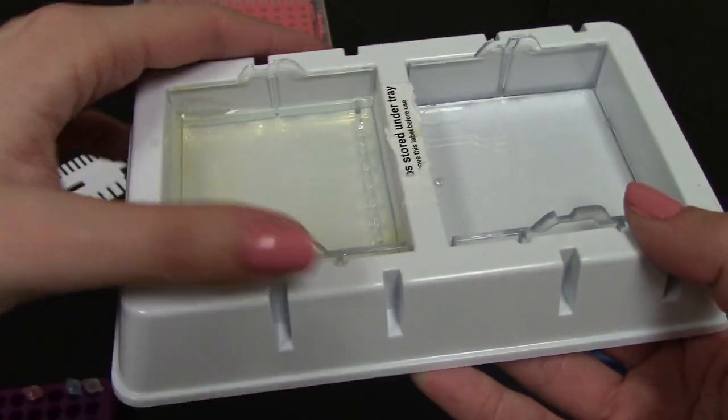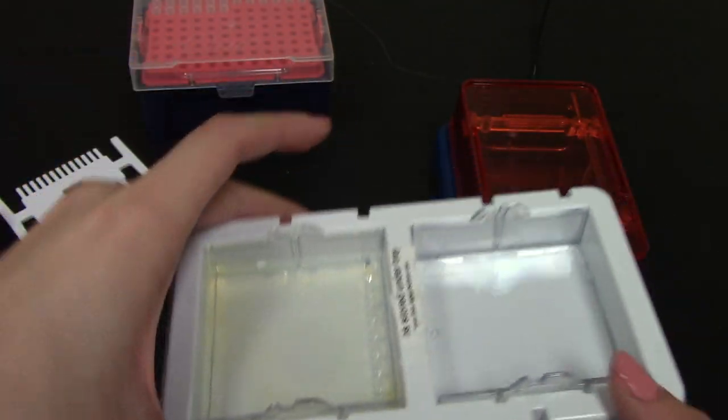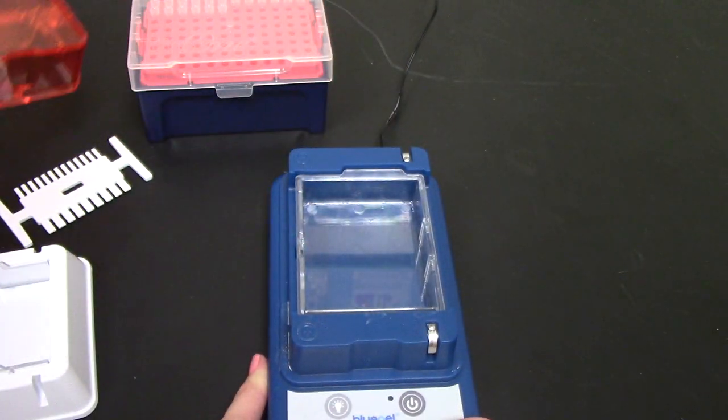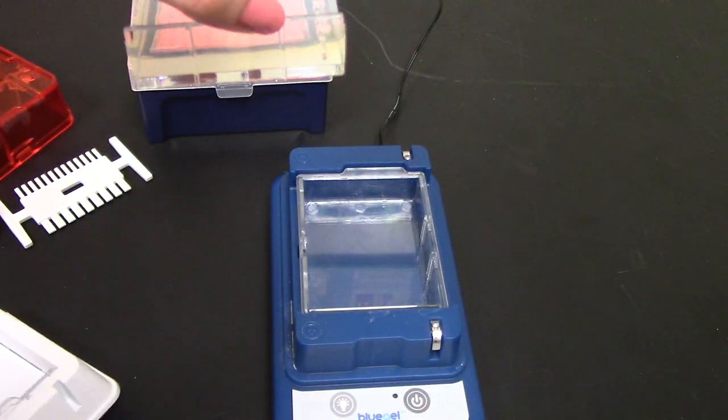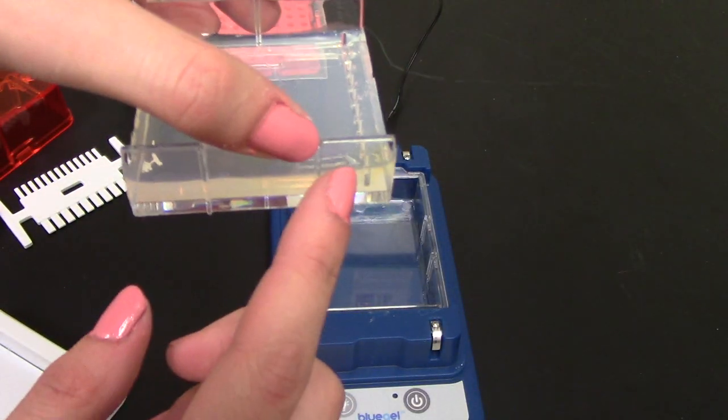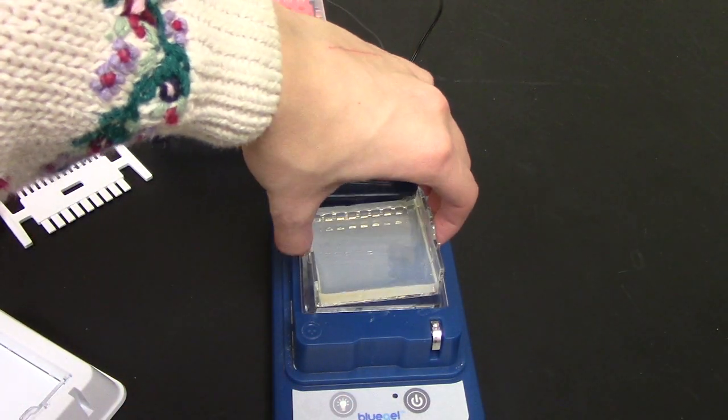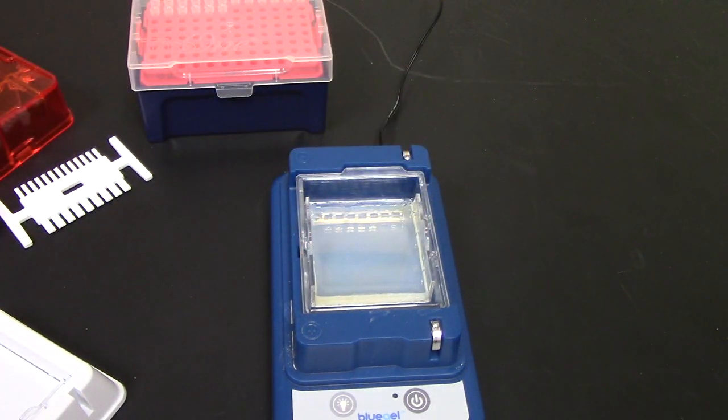I can just pick up this tray like that and I can put it into the gel electrophoresis unit. I can pick it up and then I am going to want to line up the notches—there's two here and one here—and that's going to guarantee that I run the gel the correct way.